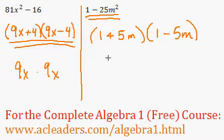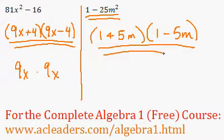plus and minus. And that's it. The fully factored form of 1 minus 25m squared is 1 plus 5m times 1 minus 5m.